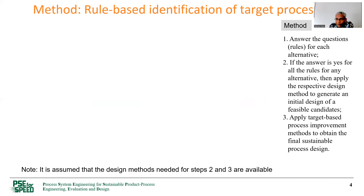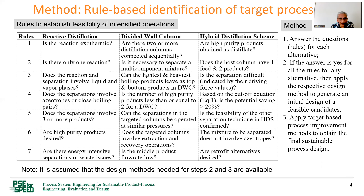The method is very simple. We have three steps. In the first step, we apply a set of rules to find the answers. If the answers are yes, then we use, in step two, the basic design to design the alternative. And in step three, we analyze and use some targets to improve the design. We assume that the design methods for step two and three are available. In each case, there are seven rules — or in another way, seven questions for each type of intensified operation. The answer needs to be yes for each of those, and if so, then one of the three types can be applied.